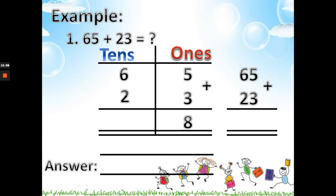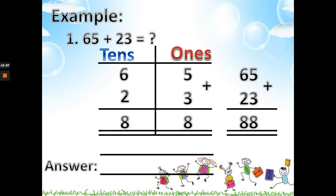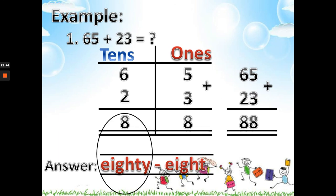Tens place: 6 plus 2 equals 8. So our answer is 88. It's the same thing you will do — add the ones place first, then the tens place. When you finish answering, write the correct number: 88, because 80 plus 8 equals 88.